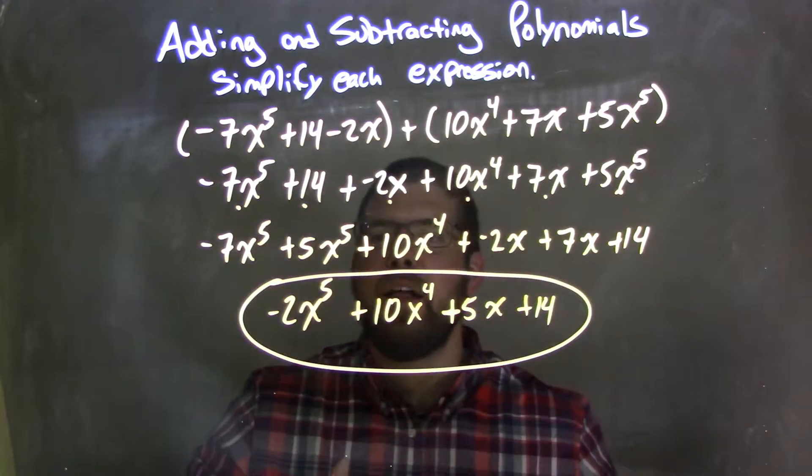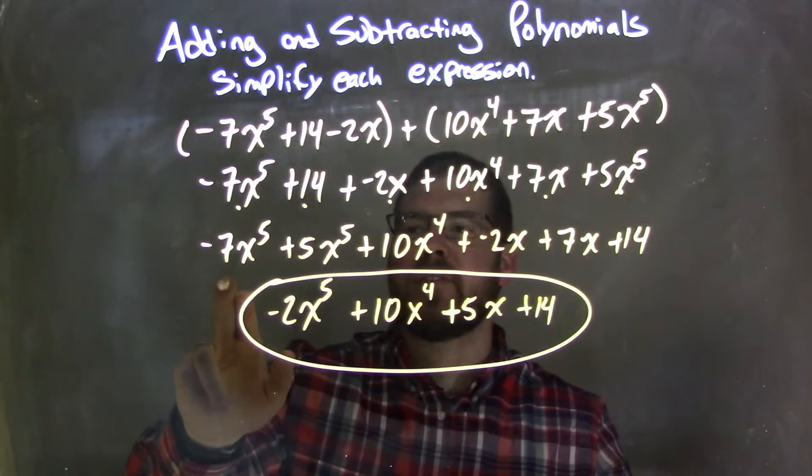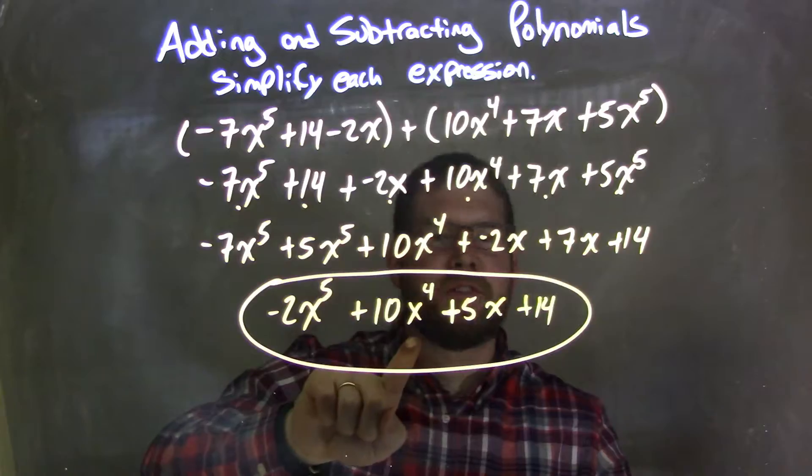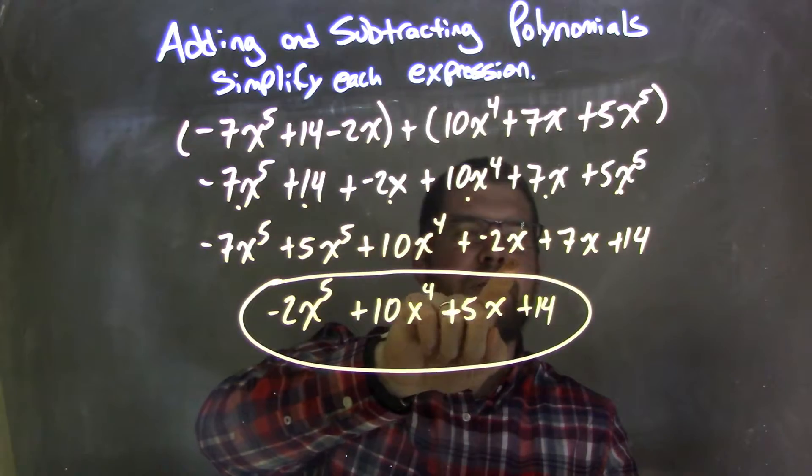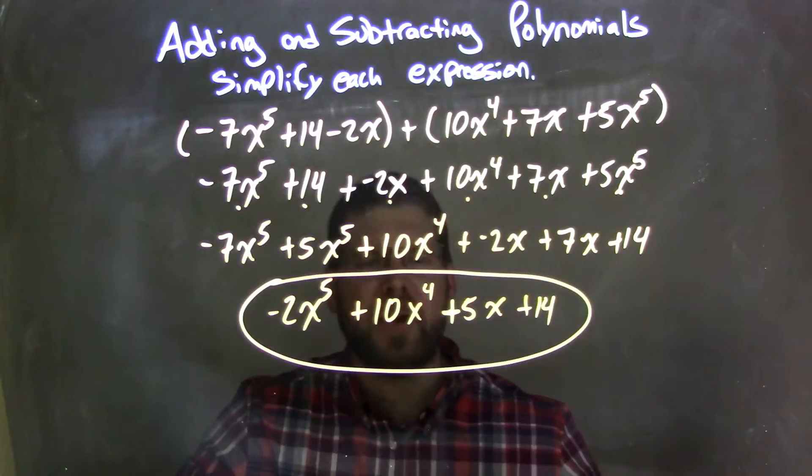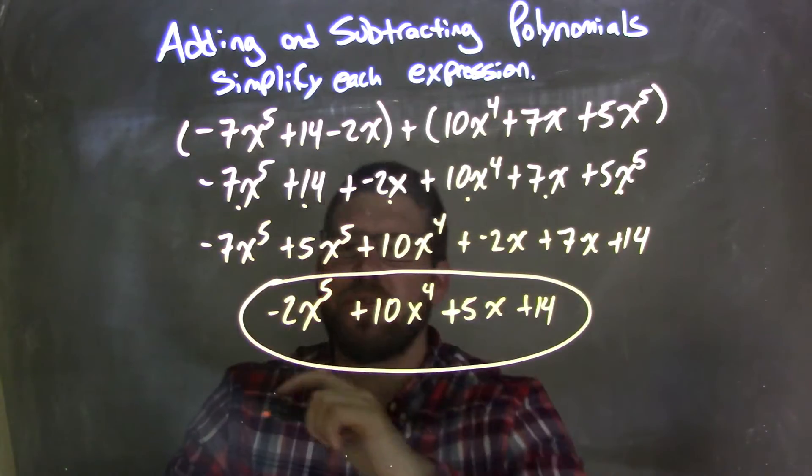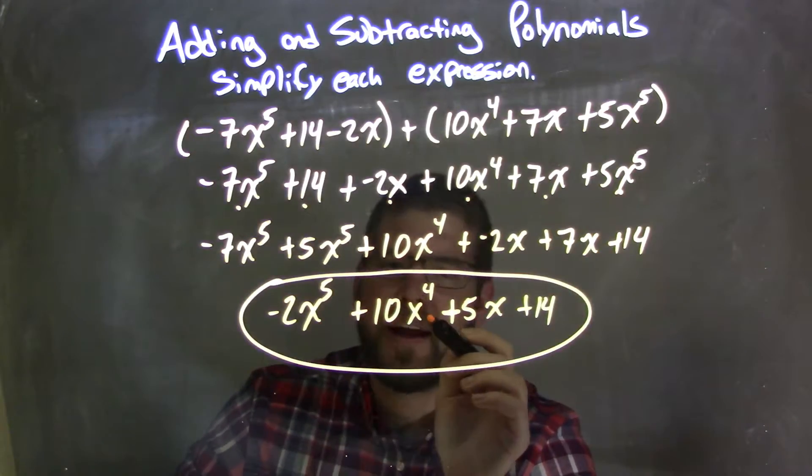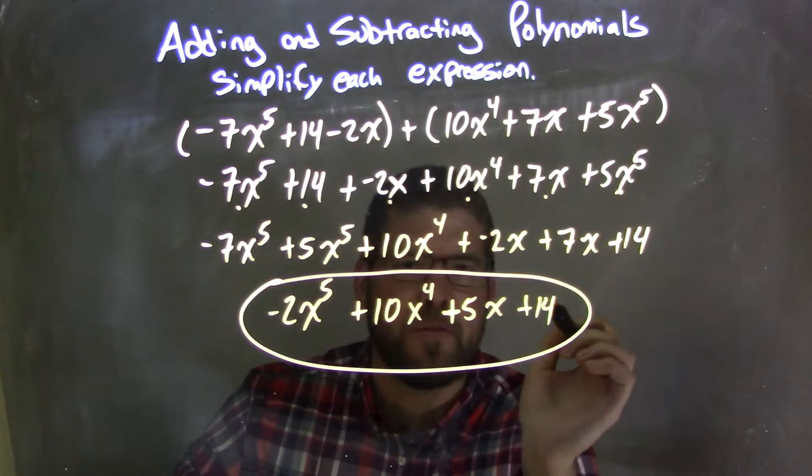Then I simplified: -7x^5 + 5x^5 = -2x^5. 10x^4 just came down, nothing else to add. -2x + 7x = 5x, and then 14. Make sure we have highest degrees first, which we do. Our final answer is -2x^5 + 10x^4 + 5x + 14.